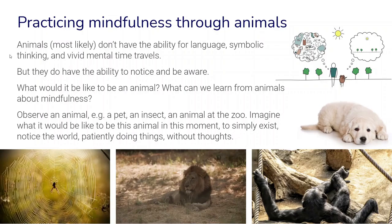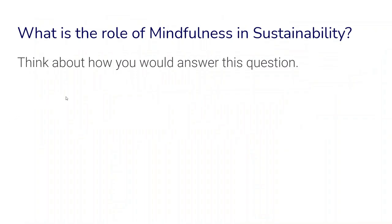Here's an interesting idea that connects to an evolutionary understanding of mindfulness. Animals most likely don't have the ability for language, symbolic thinking, or vivid mental time travel, but they do have the ability to notice and be aware. It can be fun to think about what it would be like to be an animal in a particular moment and what we could learn from animals about mindfulness. Next time you see an animal — your pet, an insect, or an animal at the zoo — imagine what it would be like to simply exist, notice the world, without any thoughts distracting you or telling you about problems in the world.